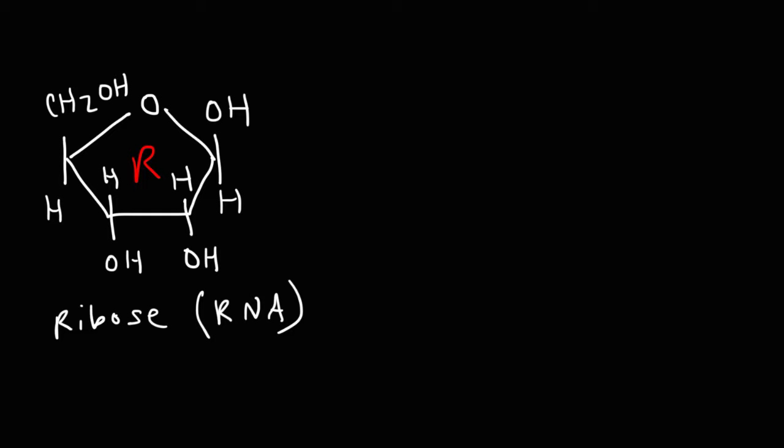The next one is a sugar called ribose. Ribose is a five-carbon sugar, and it forms a five-membered ring. Ribose is the sugar found in nucleic acids such as RNA. RNA stands for ribonucleic acid.